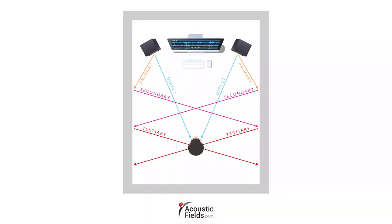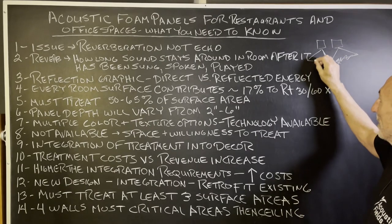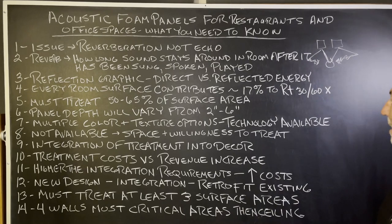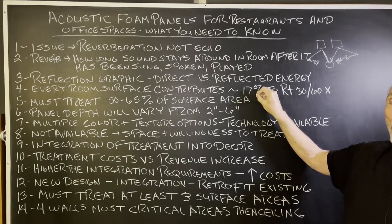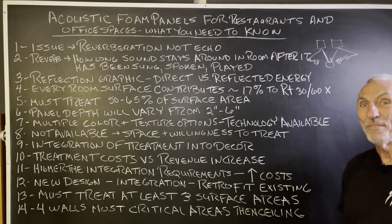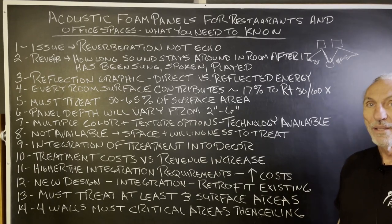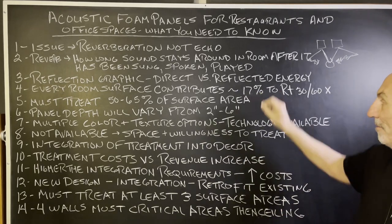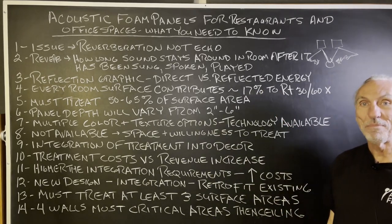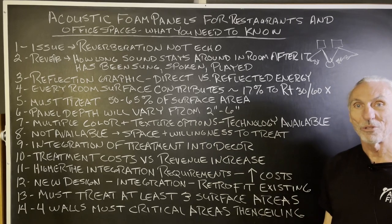Look at the reflection graphic here — the direct versus the reflected energy. We want more direct and less reflection. We have to use treatment to minimize the impact so that the direct energy gets to your ears first. Every surface area in the restaurant or office is going to contribute approximately 17% of the problem, and you have to have a lot of treatment on every surface area to minimize the impact, because treating one surface area isn't going to give you a solution.